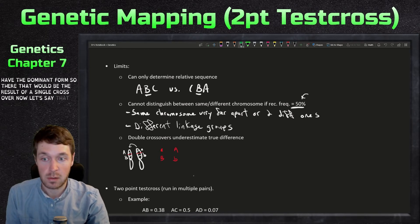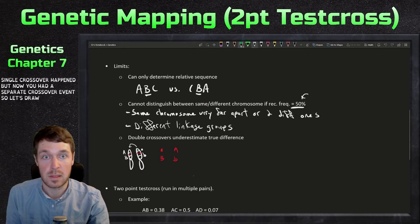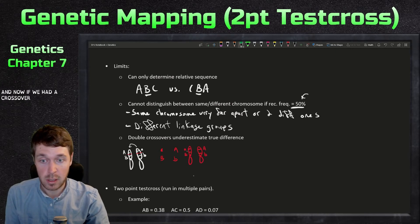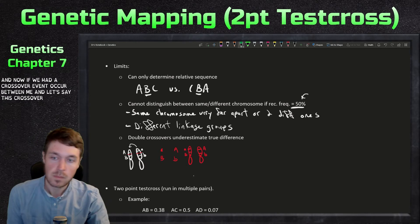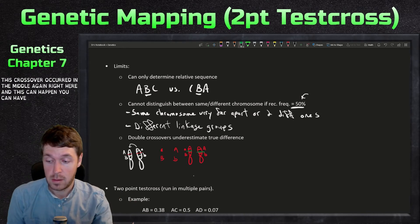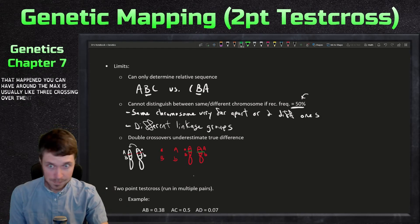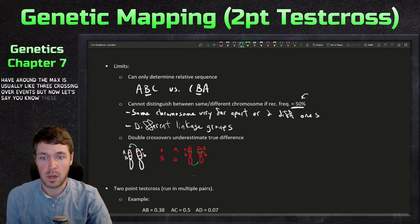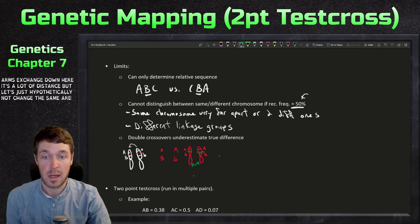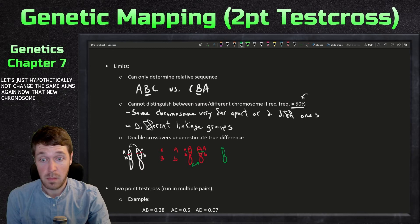Now let's say that single crossover happened, but now you had a separate crossover event. So let's draw these new chromosomes out. Now we'll keep it in red. If we had a crossover event occur between these, let's say this crossover occurred in the middle again, right here. And this can happen. You can have two crossovers that happen. You can have around the max is usually like three crossing over events. But now let's say these two arms exchange down here. It's a lot of distance, but let's just hypothetically not change the same arms again.